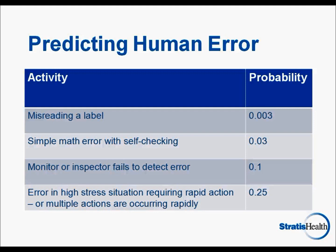The final example is the probability of error in situations where we are working quickly in a high-stress situation. In this case, the probability of error is 25%. Therefore, even though these situations may not occur frequently, it is important that our systems and processes support us in preventing error.